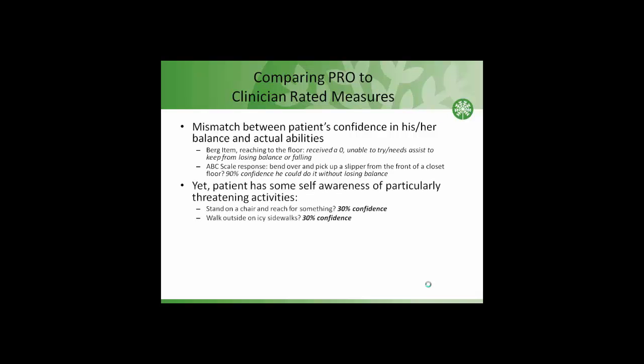We see there is a mismatch between the patient's self-reported confidence in his balance and his actual activities. Yet we know from the self-report that this patient has some self-awareness of particularly threatening activities like standing on a chair or walking on an icy sidewalk. Clinically, this could tell us to start by talking about those two high-risk activities, ask why he's so fearful about them, play back the video of him doing the slipper task, validate with him that there are issues even on that task, and begin to work our intervention around increasing his awareness of his fall risk and working on strategies to address that risk.